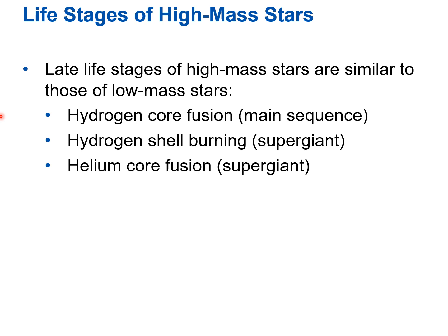The late-life stages of a high-mass star are similar to those of a low-mass star. When on the main sequence, it has hydrogen fusion in its core. When the hydrogen is all converted to helium, it becomes not a giant but a supergiant — going farther up on the H-R diagram. It develops a hydrogen-fusing shell around a helium core, which then produces enough temperature and pressure to start fusing helium into carbon. The entire star at this point is a supergiant.